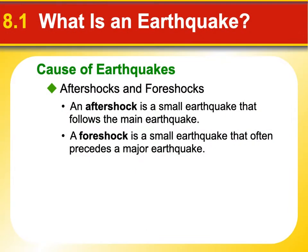Earthquakes usually don't occur in isolation. Often there are foreshocks — small slippages where pieces of the fault slide a little bit before the main event. Then the big one hits, followed by a series of smaller aftershocks. In videos of earthquakes you often see some rumbling first, maybe enough time for people to take cover, then the main quake, then smaller ones after. Foreshocks don't occur far enough in advance to help with long-term predictions, but they do usually come right before the main earthquake.